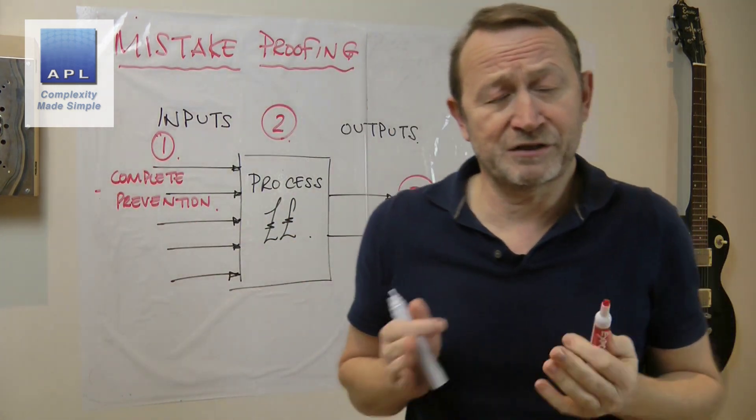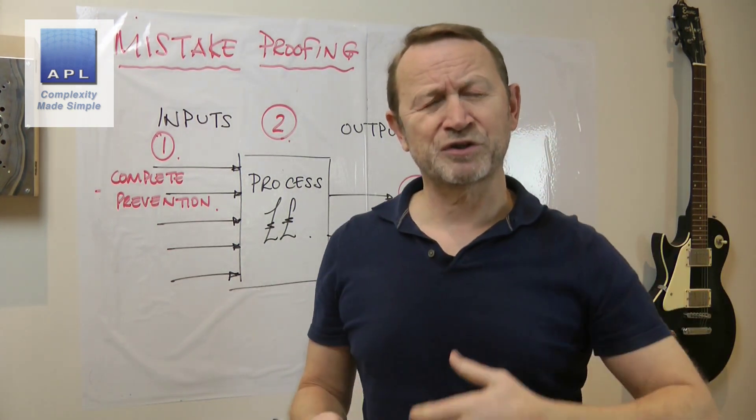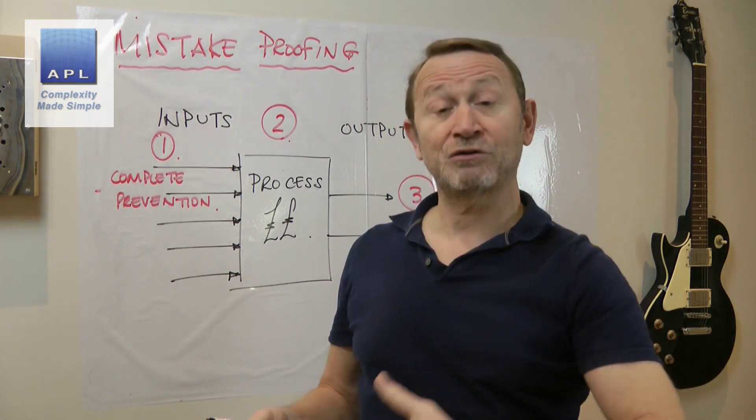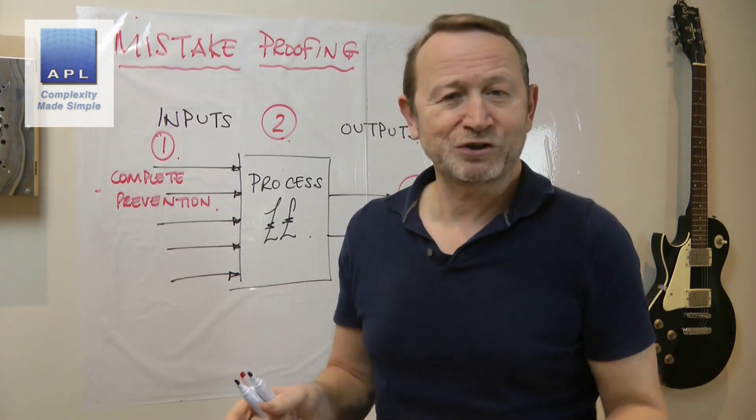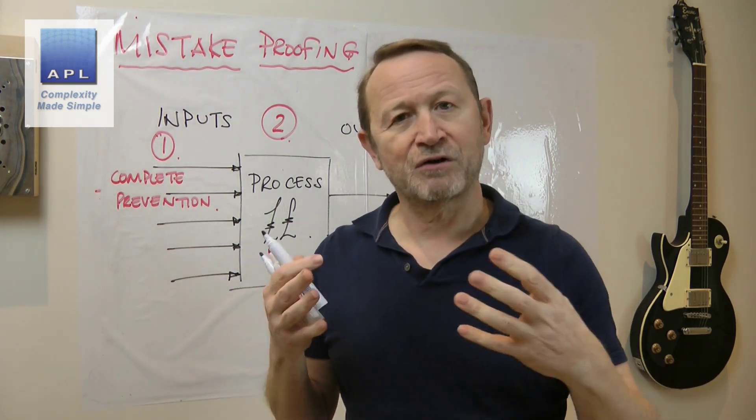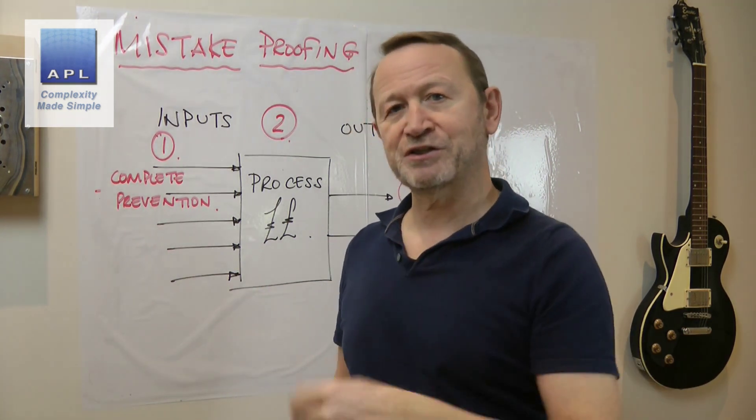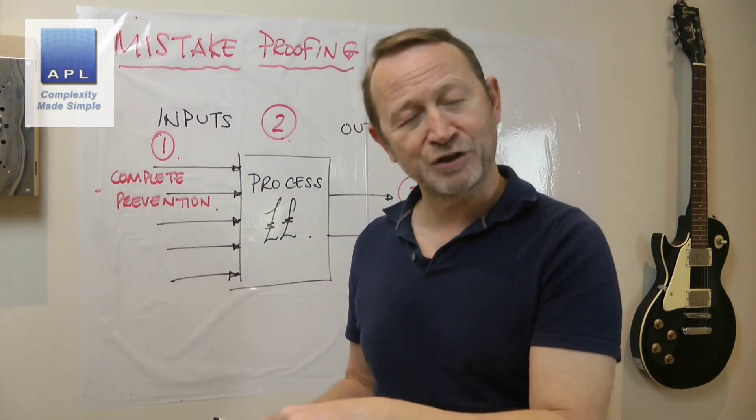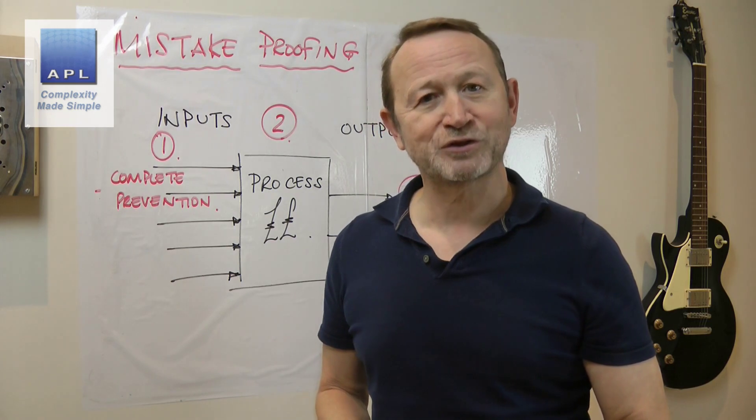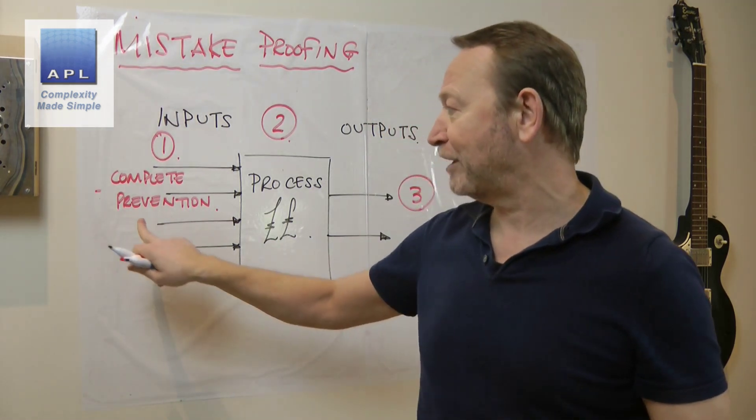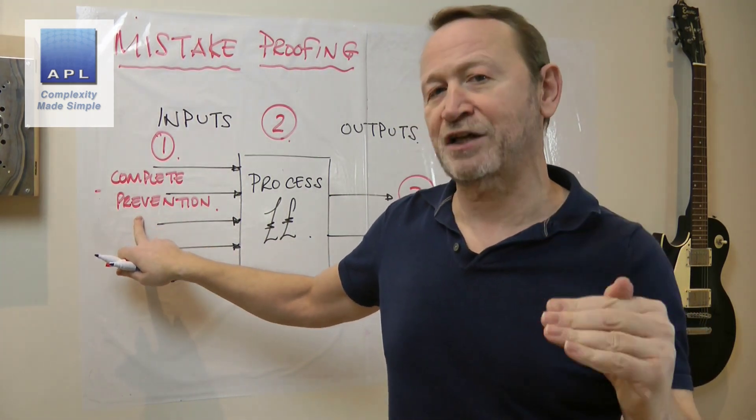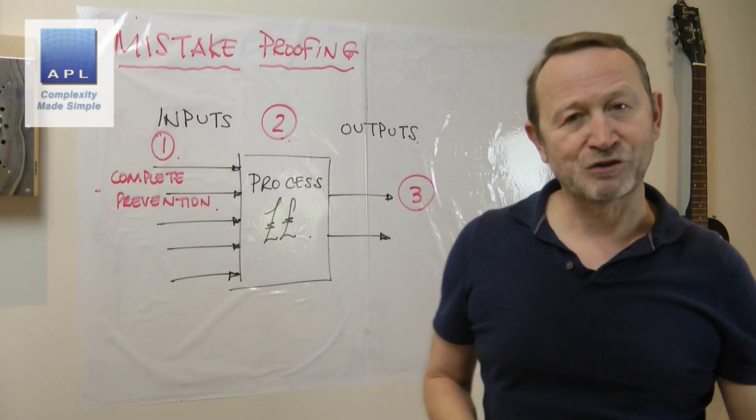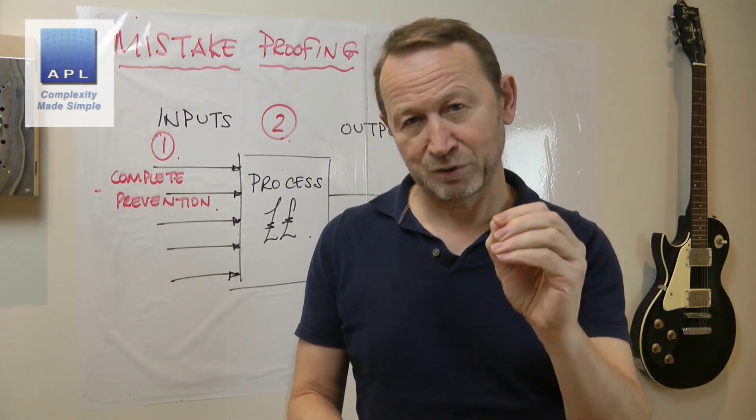This is the one we tend to think about as a mistake proofing device. As I mentioned, if you're dealing with something mechanical maybe you have a unique shape, you can only go in one way. If you're dealing with something mechanical maybe you have a common shape so it can go in any way around. We see them on websites. When you go into a website and it says please give me your email address, your telephone number, and your address, if you fail to fill out one of the boxes it won't let you proceed to the next page. So it's a mistake proofing device. Complete prevention, and this is the gold standard of mistake proofing: complete prevention on the input side of the process.